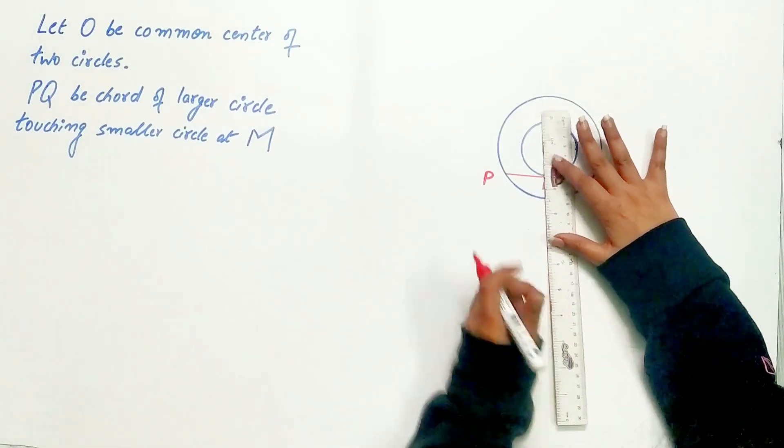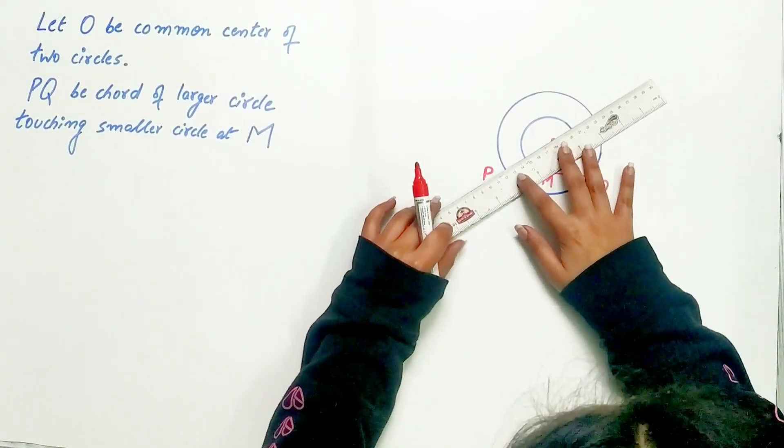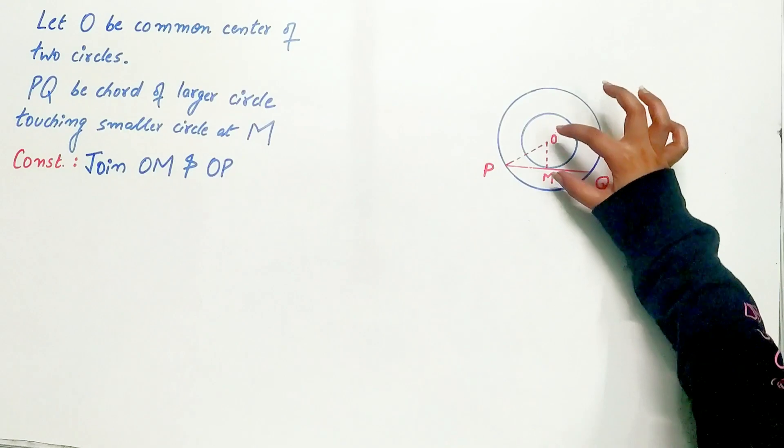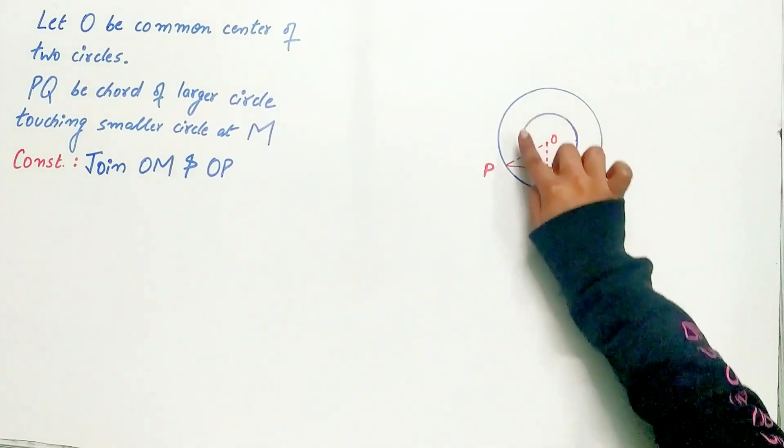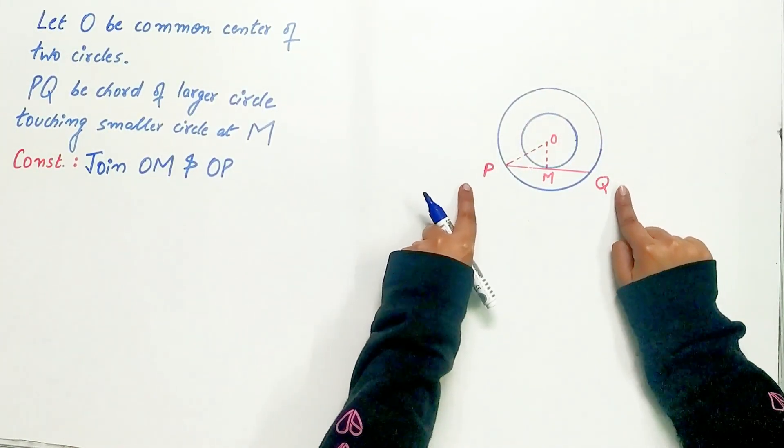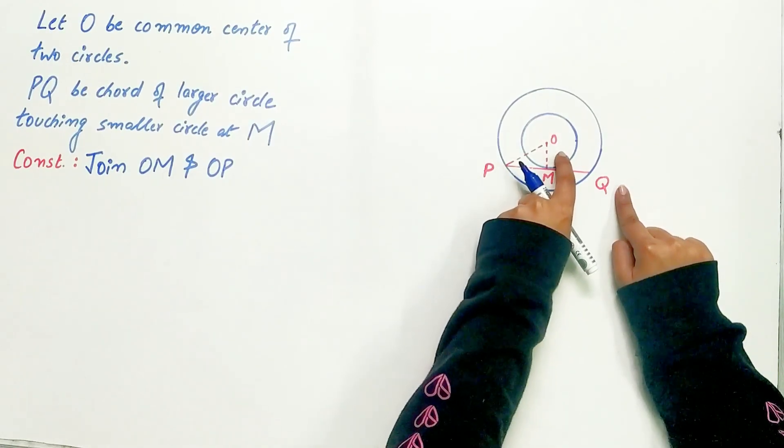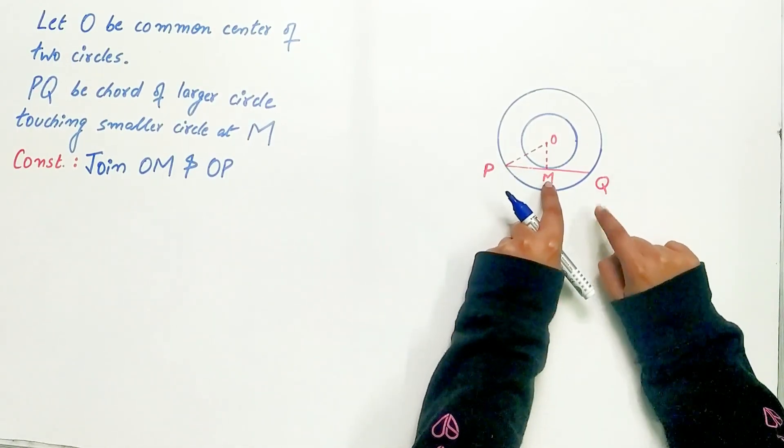Let us join OM and OP. Listen carefully. OM is the radius of the smaller circle. PQ is the tangent to the smaller circle and the point of contact is M.